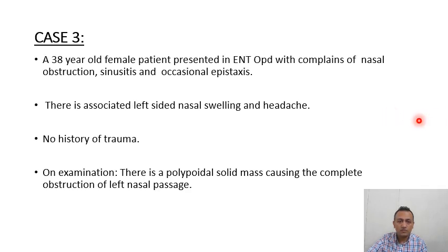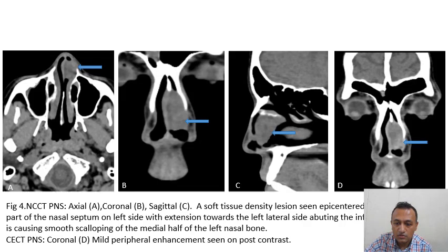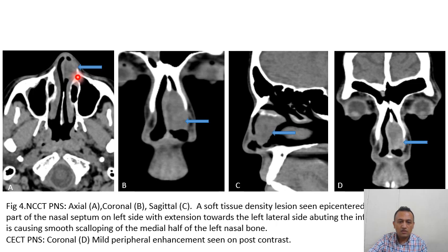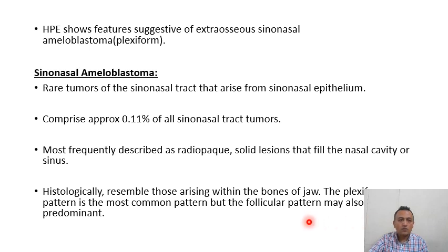Case 3: a 38-year-old female presenting with nasal blockage, obstruction, sinusitis, and occasional epistaxis. There is associated left-sided nasal swelling and headache; no history of trauma. On examination there is a polypoid solid mass causing complete obstruction of the left nasal passage. On NCCT PNS — axial, coronal and sagittal views — a soft tissue density lesion epicentered in the cartilaginous part of the nasal septum on the left side with extension towards the left lateral side, abutting the inferior turbinate and causing smooth scalloping of the medial half of the left nasal bone. CECT PNS coronal shows mild peripheral enhancement.